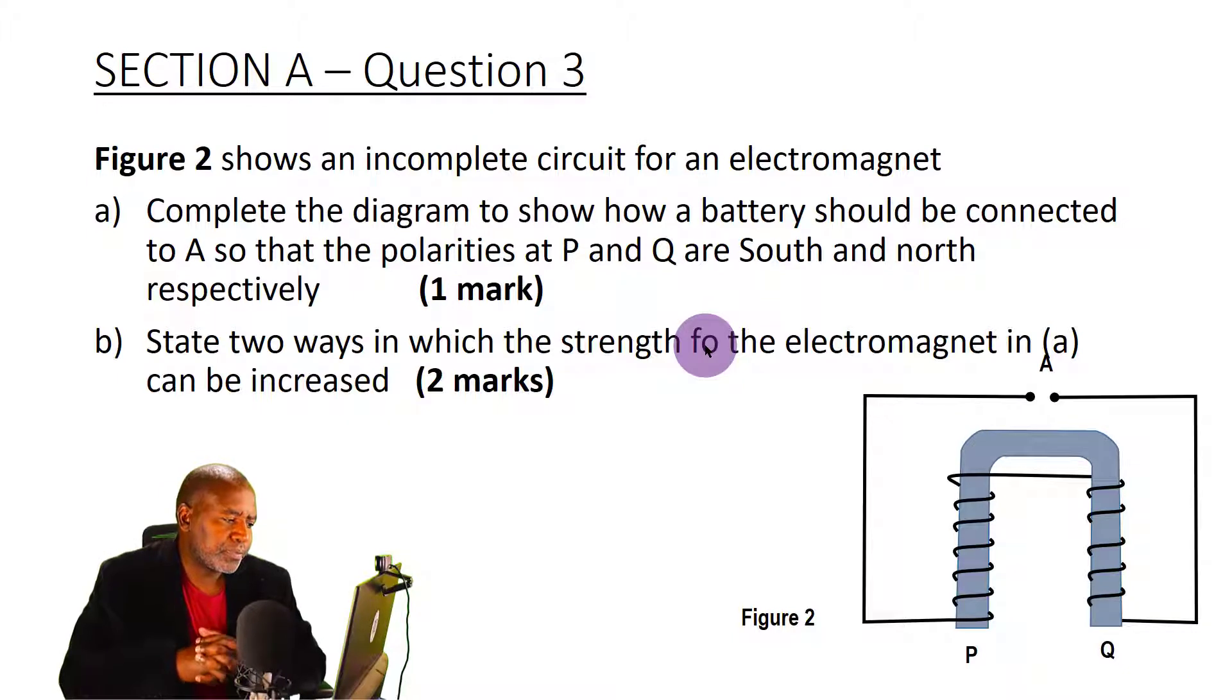Now this is an electromagnet. What is an electromagnet? It consists of a coil usually wound on a soft iron material. When we pass current through that coil it makes that coil to be a magnet.